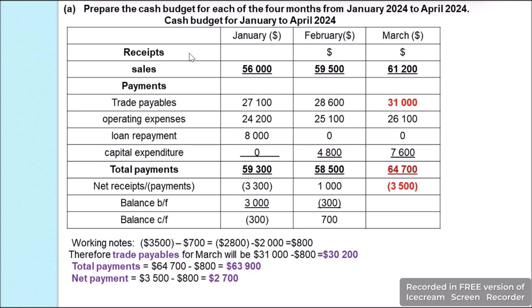We will start with January. In receipts, we have cash sales of $56,000, and these are the only receipts, so total receipts will be $56,000. For payments, we have trade payables brought forward from 1st January of $27,100, operating expenses of $24,200, and loan repayment of $8,000. We don't have any capital expenditure. So totalling: $27,100 plus $24,200 plus $8,000 gives total payments of $59,300.